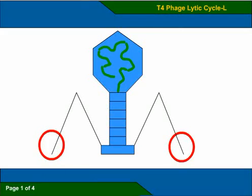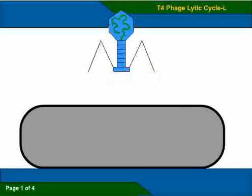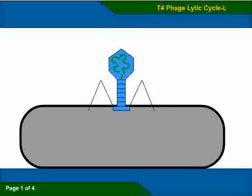The T4 phage attaches itself to the host using its tail fibers to stick to specific receptor sites on the surface of the E. coli.